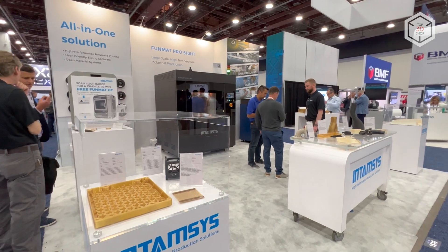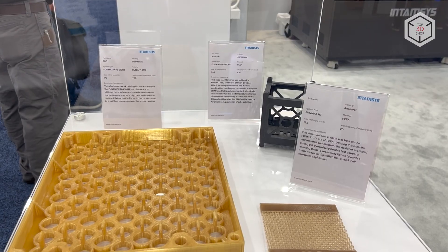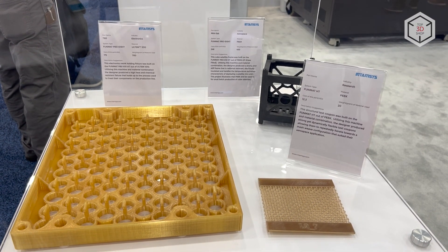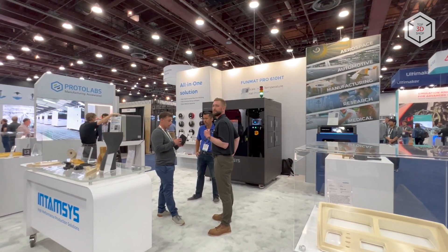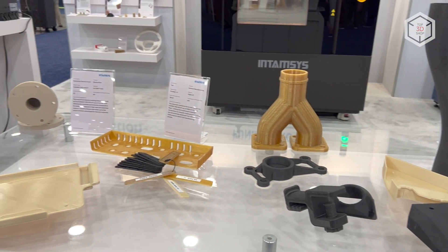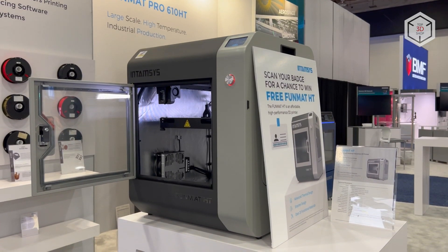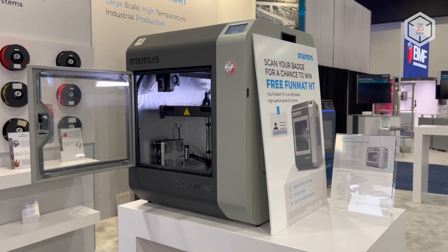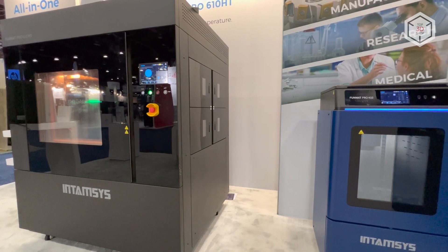Entamsys is a well-known manufacturer of professional and industrial FDM 3D printers capable of processing high temperature thermoplastic polymers such as Peek, Peck, Ultem and so forth. The company's lineup includes 3D printers of various sizes from desktop devices to large industrial equipment.